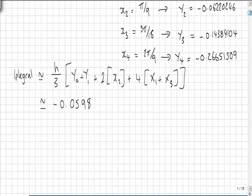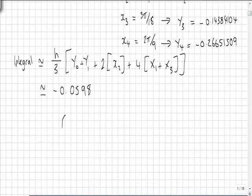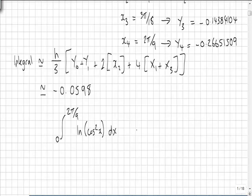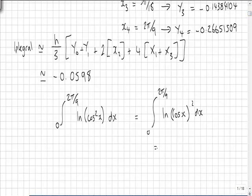In addition to this question it also asks for an approximation to the integral from 0 to 2π by 9 of natural log of cos squared x dx. Well using laws of logs we know that is equal to 2 times the integral from 0 to 2π by 9 of natural log of cos x dx.